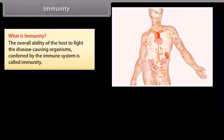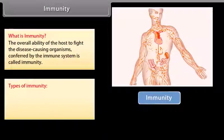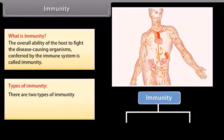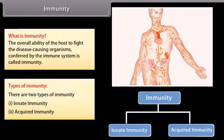What is immunity? The overall ability of the host to fight disease-causing organisms, conferred by the immune system, is called immunity. There are two types of immunity: innate immunity and acquired immunity.